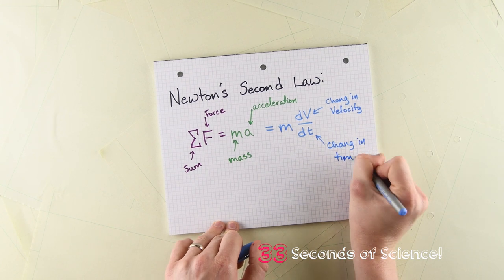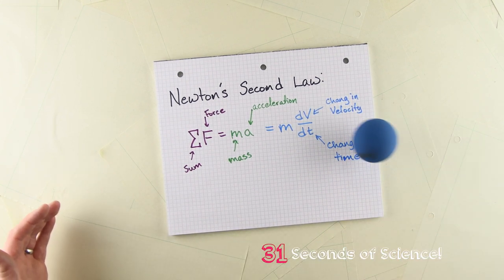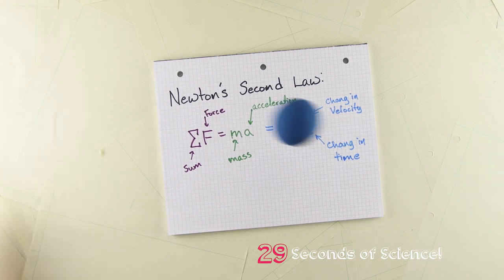So Newton's second law says if we know what forces are acting on an object, we know how much it will speed up or slow down.